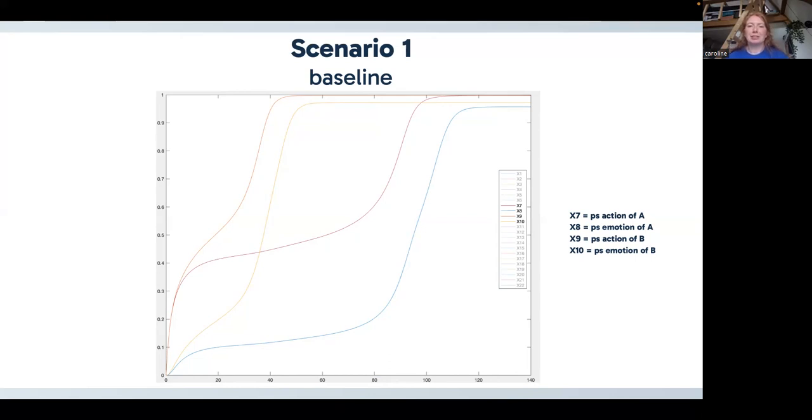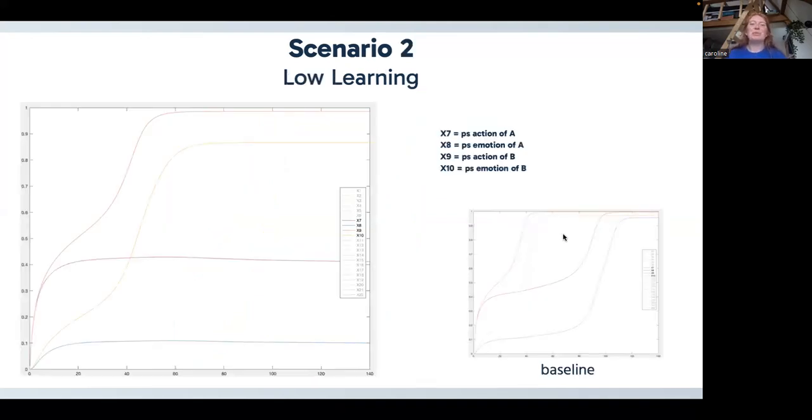In our second scenario, we put our persistence rate lower for the Hebbian learning. And we can see here the development in the preparation states again. So we can see that here for agent A, the preparation values for the action as well as for the emotions stay a lot lower than they do for B. So here we can conclude that our agents don't come to a decision. And we can compare it with our baseline and we can see the difference between the development for agent A.